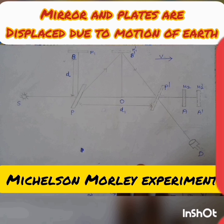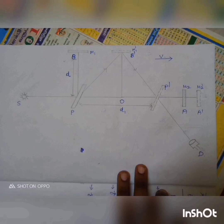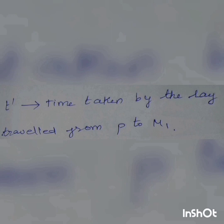Let's say that M1 is in the same way. The M1 and M2 plates are very different. The other thing is, if the motion of the earth is in the same way, we have to change it. So let's change the distance. The first thing is that we have to make a derivation. T-dash is the time taken by the travel from P to M1. P is the M1. Let's say t-dash, let's say m1-dash.